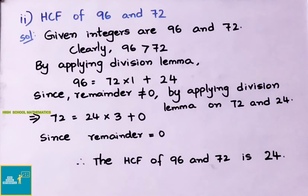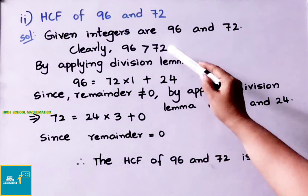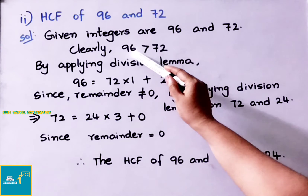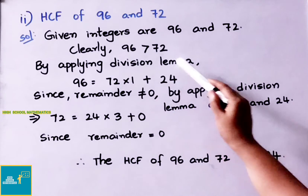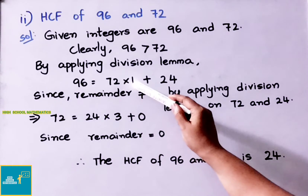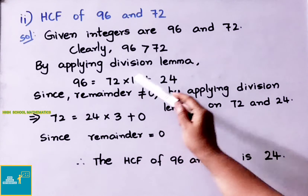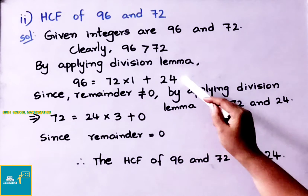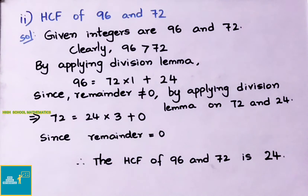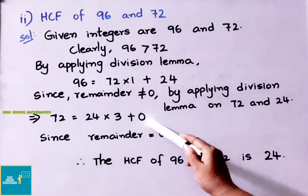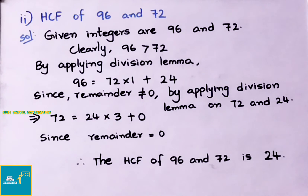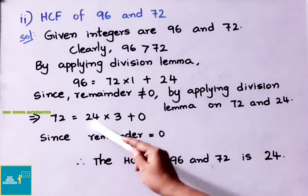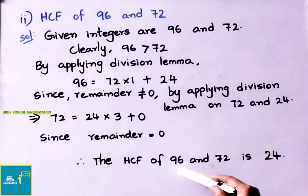Second sum: find HCF of 96 and 72 using Euclid's Division Lemma. Given integers are 96 and 72. Clearly 96 is greater than 72. Applying division lemma: 96 = 72×1 + 24 (remainder 24). Since remainder is not 0, apply lemma on 72 and 24: 72 = 24×3 + 0 (remainder 0). Since remainder is 0 we stop. Therefore the HCF of 96 and 72 is 24.